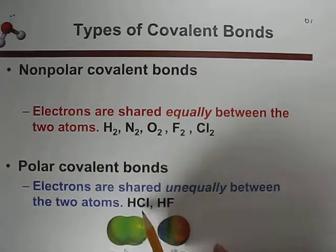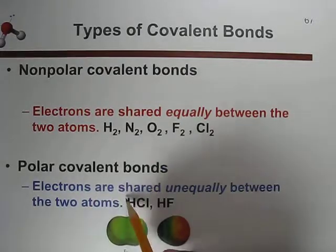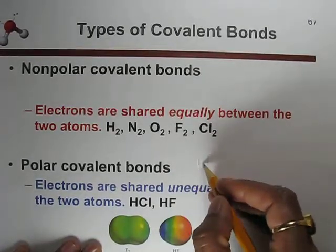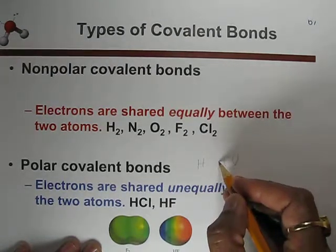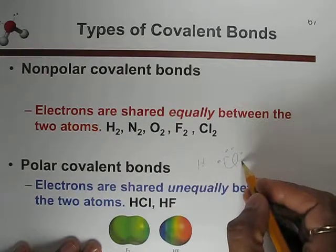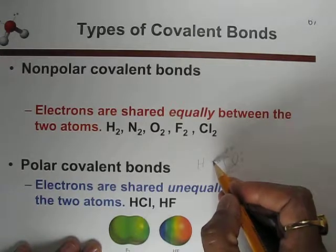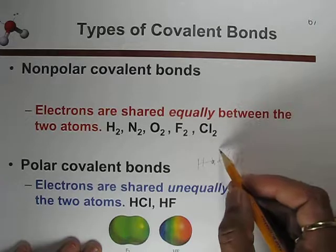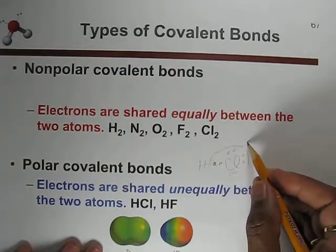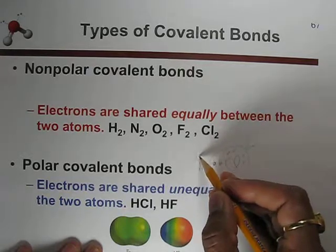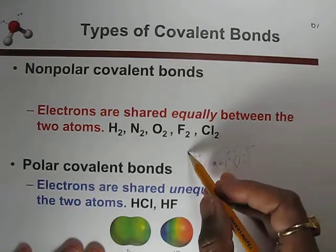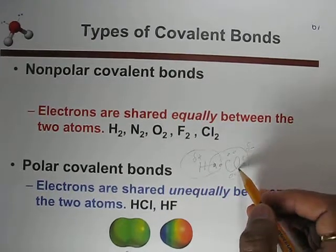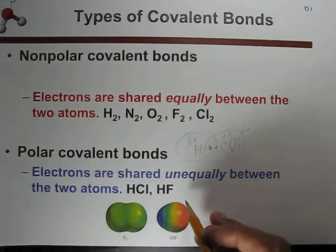If there are two different types of atoms, electrons are shared unequally between the two atoms, forming a polar covalent bond. For example, in HCl, hydrogen has one electron and chlorine has seven. Chlorine has a tendency to pull the electron toward itself more than hydrogen, so it becomes slightly negative and hydrogen gets slightly positive charge — partial positive, partial negative.